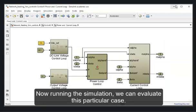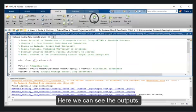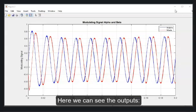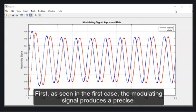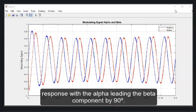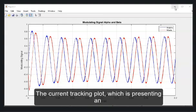Now, running the simulation, we can evaluate this particular case. Here you can see the outputs. First, as in the first case, the modulating signal produces a precise response, with the alpha leading the beta component by 90 degrees.